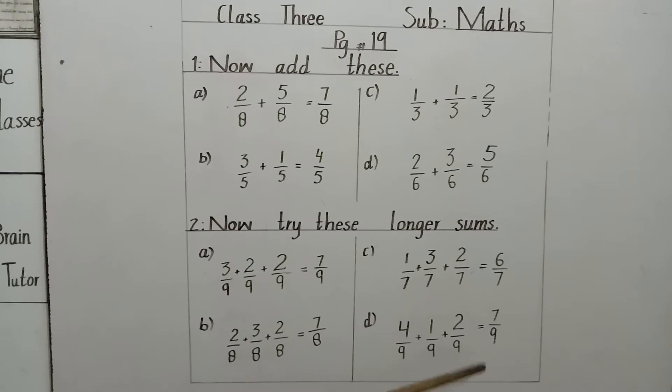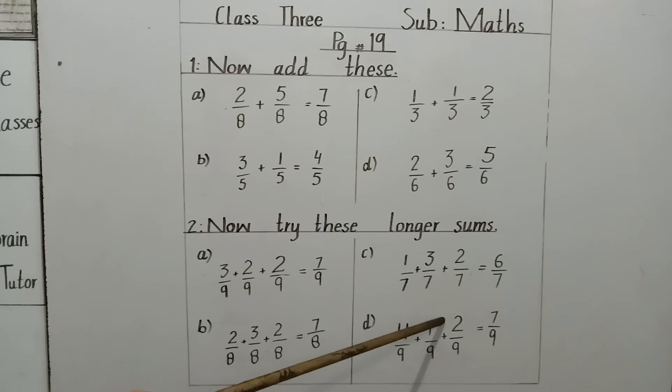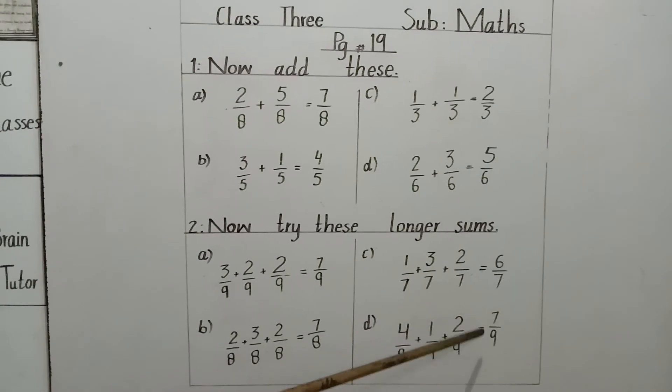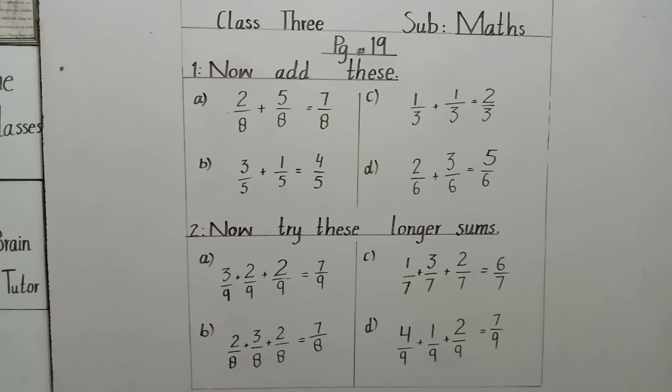9 is same. So we have written here 9. 4 plus 1 equals 5 and 5 plus 2 equals 7. Answer is 7 by 9. I hope you all have understood. Now open your books and write it down. Thank you.